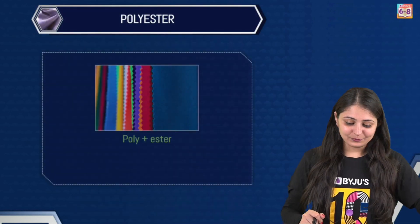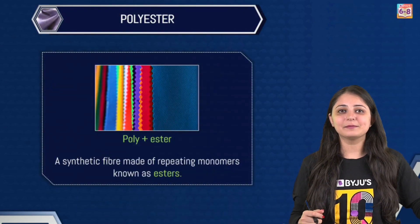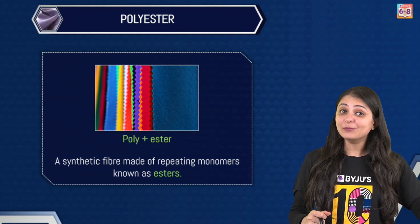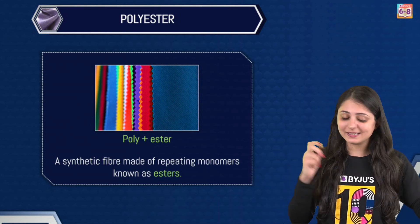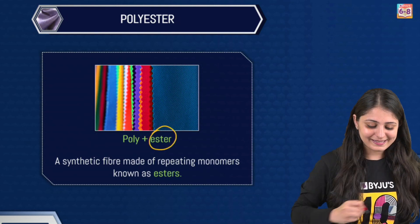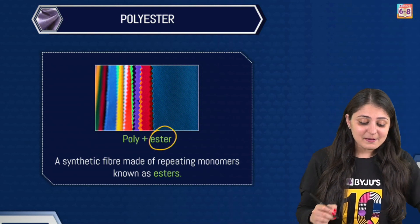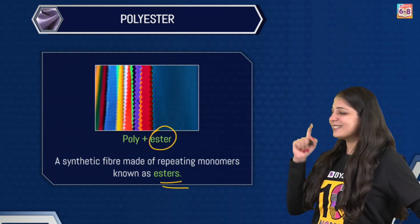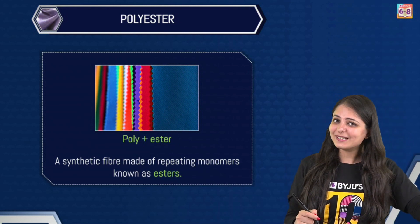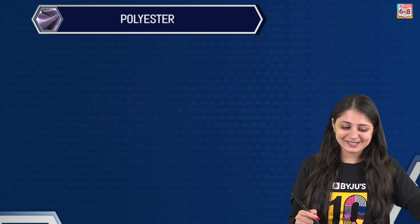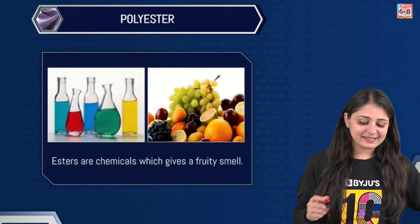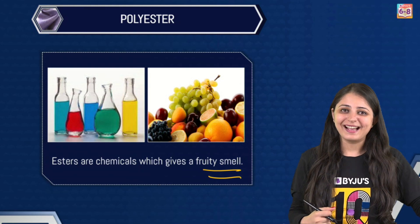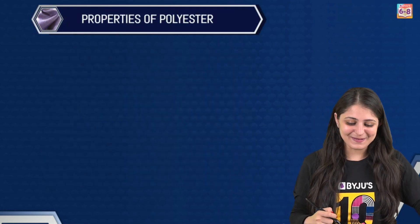Now, polyester is nothing but poly plus ester. Which means that the monomer in this case is going to be ester. So it's a synthetic fiber made of repeating monomers which are known as esters. Esters are chemicals which give a fruity smell — that's how you can identify an ester, by the fruity smell.